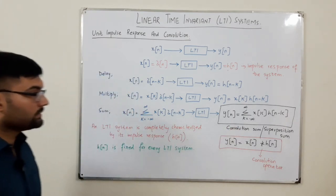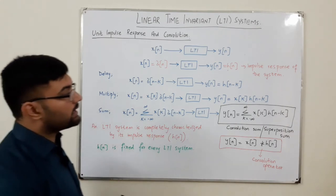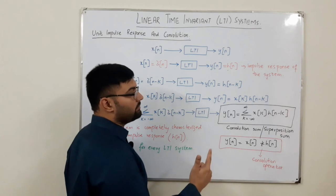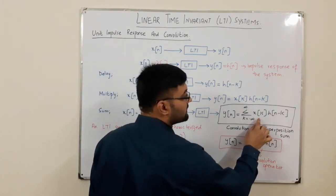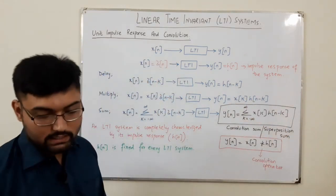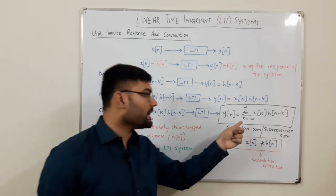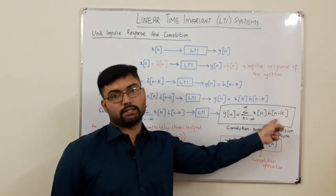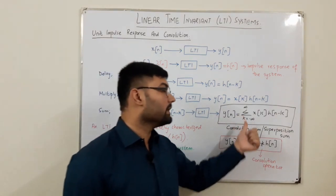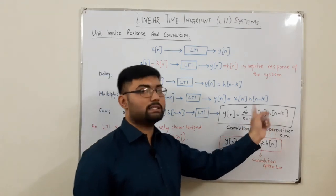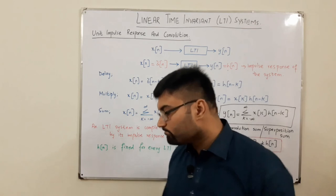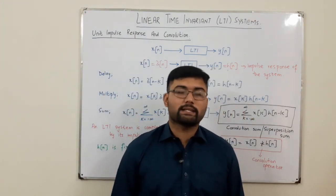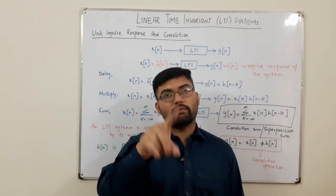Convolution is the running sum of one signal over the shifted version of another signal — this is the mathematical definition of convolution. In discrete time it is a running sum, and in continuous time it would be a running integral, of one signal over the shifted version of another signal. That's all for today; see you in the next lecture where we start discussing examples of convolution. Take care of yourself and everyone around you. Goodbye.